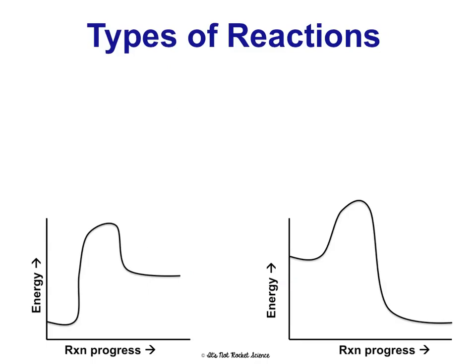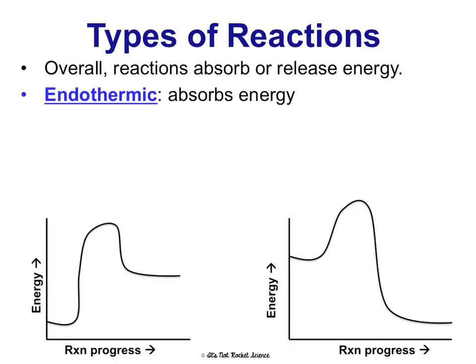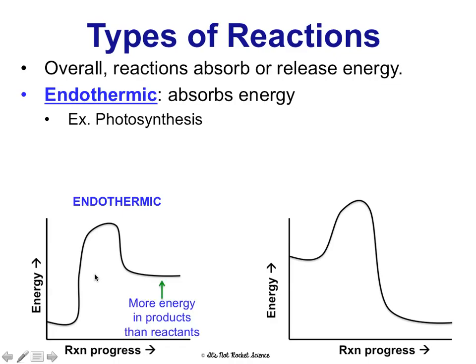There are two types of chemical reactions, and you can see these energy diagrams look different for a reason. Overall, all reactions are either going to absorb net energy or release energy. Endothermic reactions absorb energy — an example is photosynthesis, which is the process of absorbing energy from the sun and storing it chemically in glucose. On an energy diagram, the product energy is higher than the reactant energy, meaning energy was absorbed, making it endothermic.